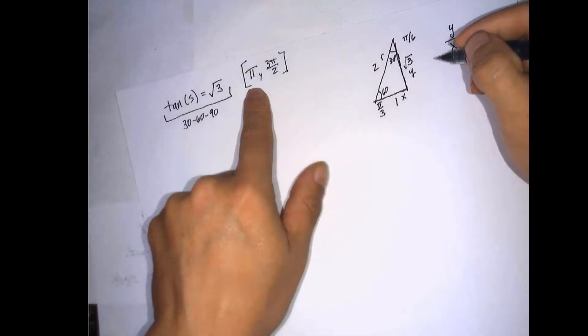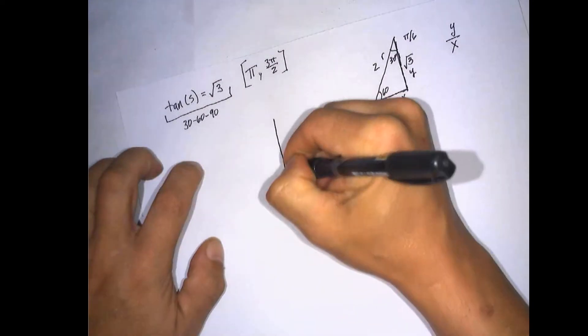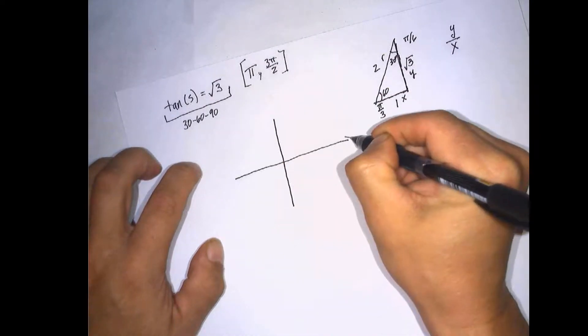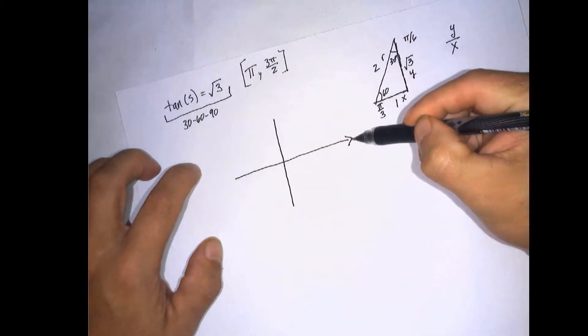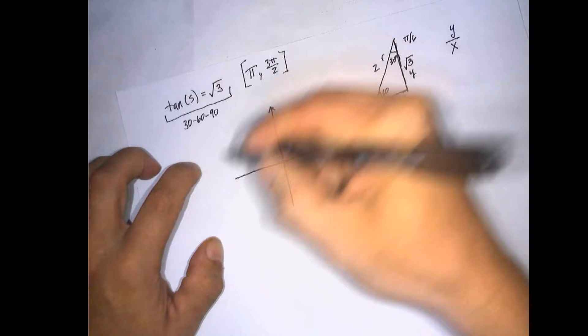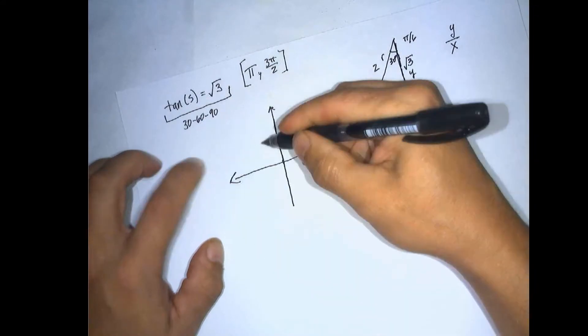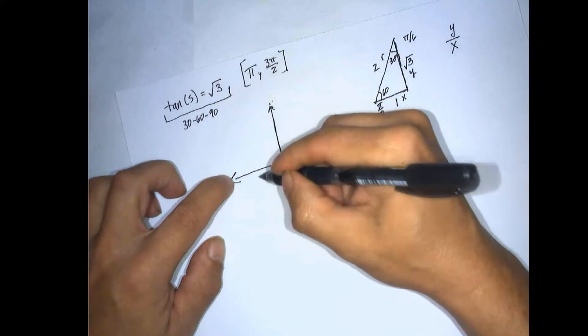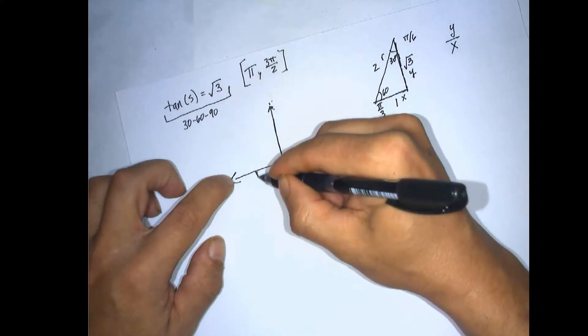But we're between pi and 3 pi over 2. So this is 0. This is pi over 2 right here. This quadrant is between pi over 2 and pi. So pi and 3 pi means that we're dealing with a triangle right here.